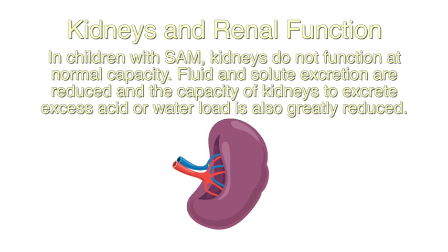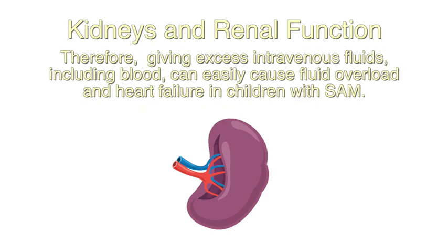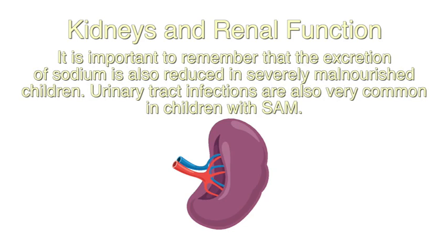Regarding kidneys and renal function: in children with severe acute malnutrition, the kidneys are not functioning at normal capacity. Fluid and solute excretion are reduced, and the capacity of kidneys to excrete excess acid or water load is also greatly reduced. Therefore, giving excess intravenous fluids including blood can easily cause fluid overload and heart failure. The excretion of sodium is also reduced, and urinary tract infections are very common in these children.